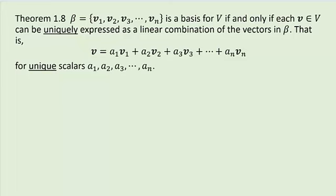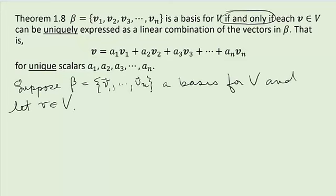Here is our first theorem. Beta is a basis for V containing n vectors if and only if each vector v in V can be uniquely expressed as a linear combination of the vectors in beta. Since we have an if-and-only-if, we need two proofs. Suppose beta is a basis for V, and let v be any vector in V. Since beta is a basis, there exist scalars a_1 through a_n such that v equals a_1*v_1 + a_2*v_2 + ... + a_n*v_n. Since beta is a basis, we know those scalars exist.